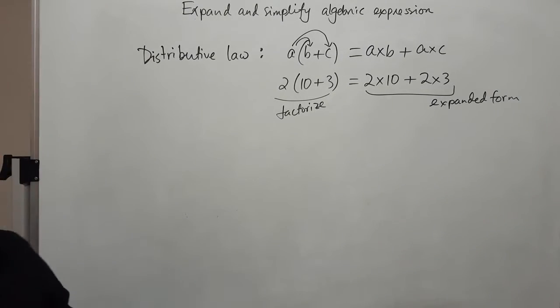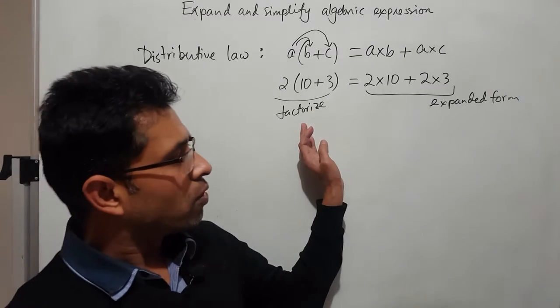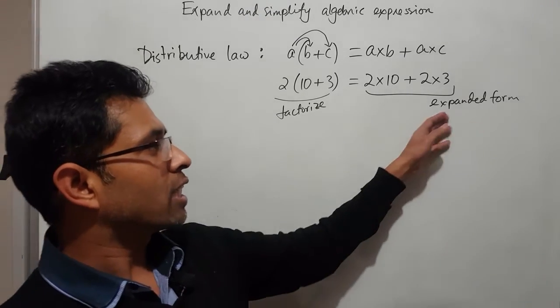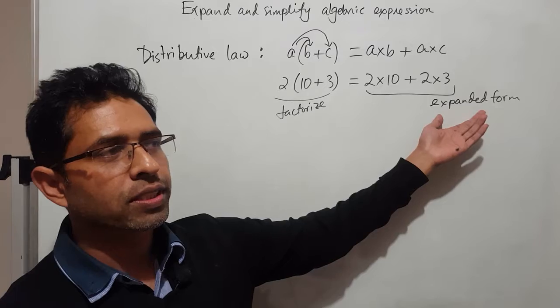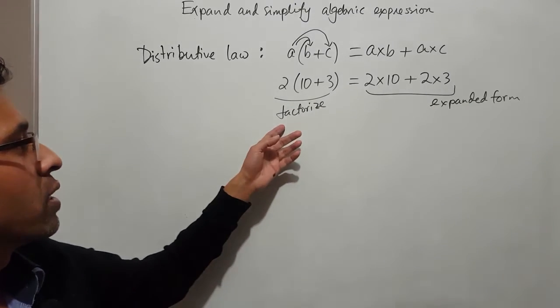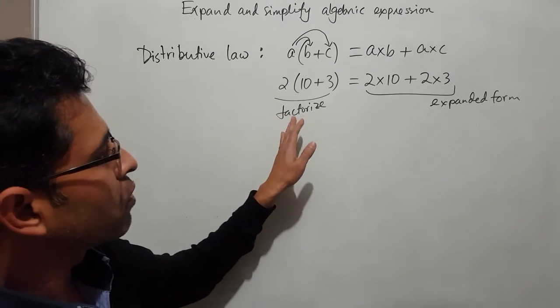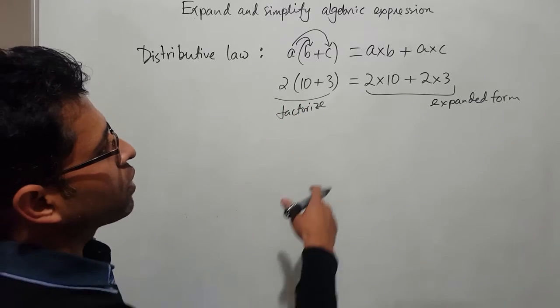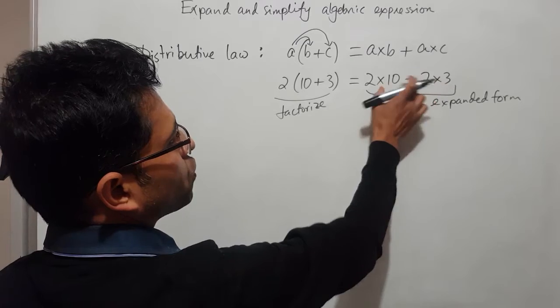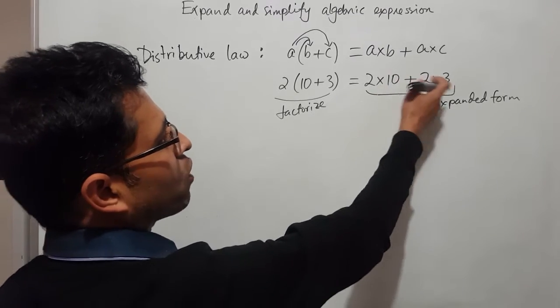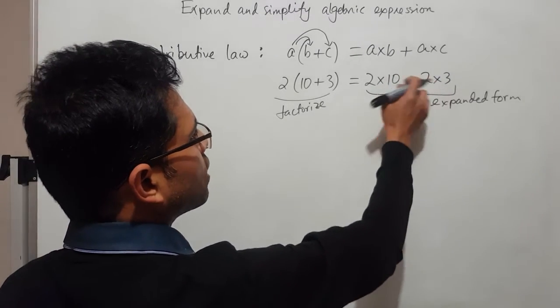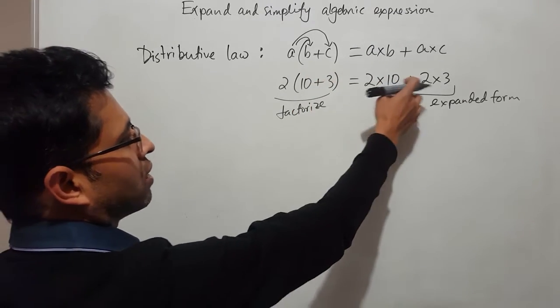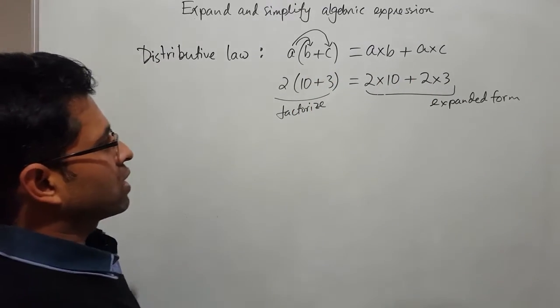Basically the factorized form is the opposite procedure. This is the simplest form. What we are doing is taking the common factor 2 which is called the highest common factor for these two terms, and then we take that outside and within the bracket the rest of the numbers would be there. That's the factorized form.